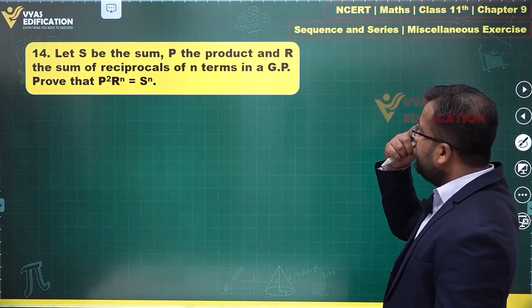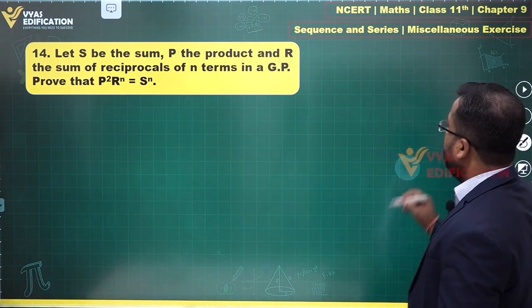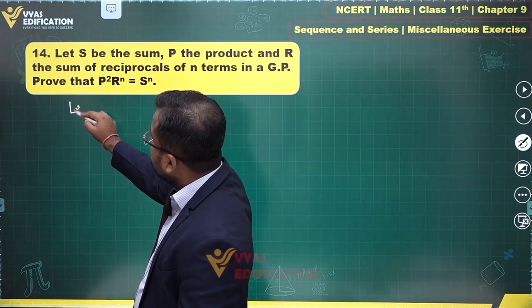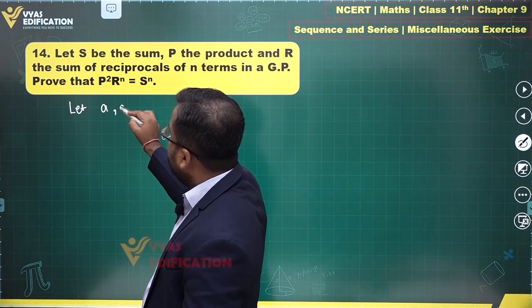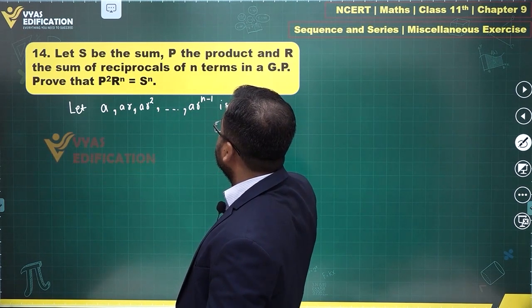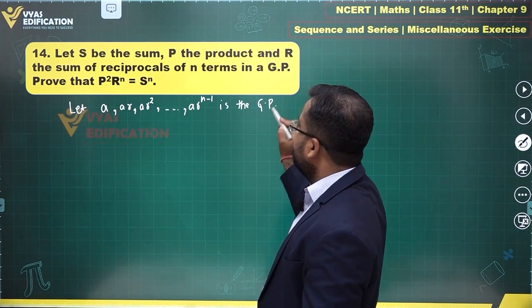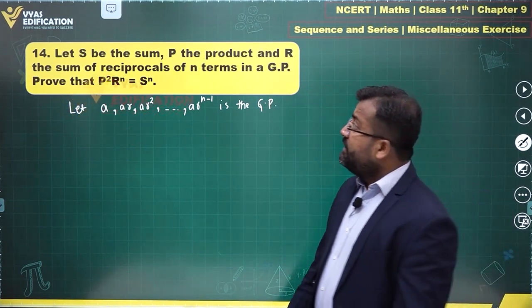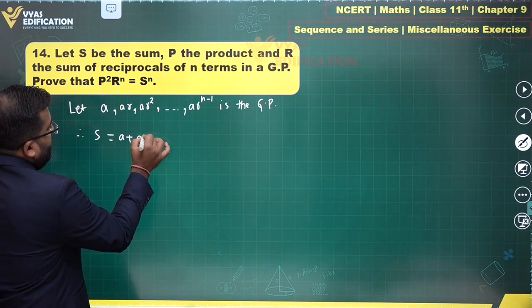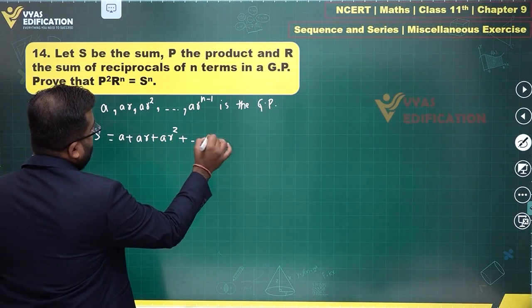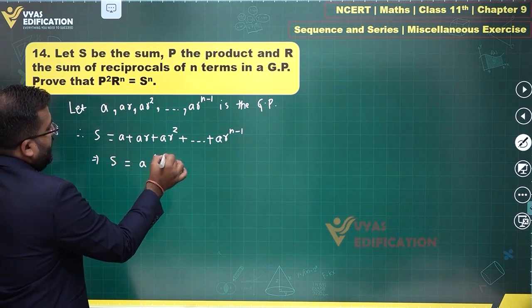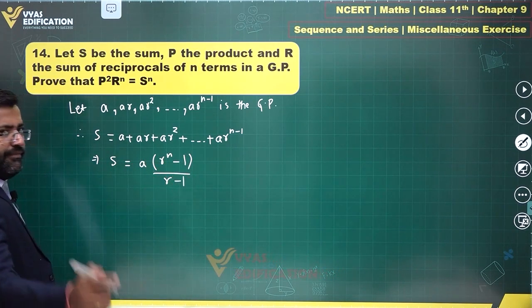Question number 14: Let S be the sum, P the product, and R the sum of reciprocals of n terms of a GP: a, ar, ar², ..., ar^(n-1). S is equal to a + ar + ar² + ... + ar^(n-1), which implies S = a(rⁿ - 1)/(r - 1). That's equation one.